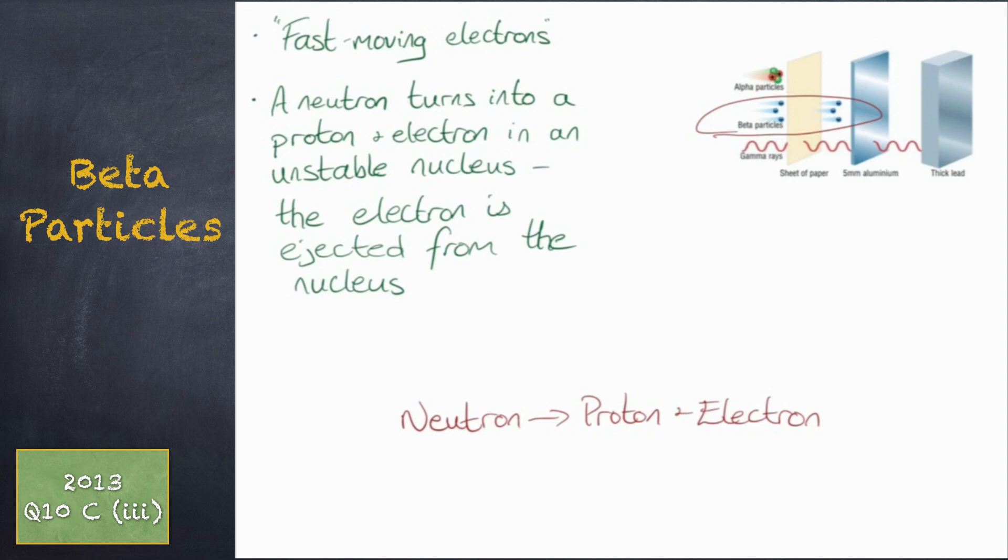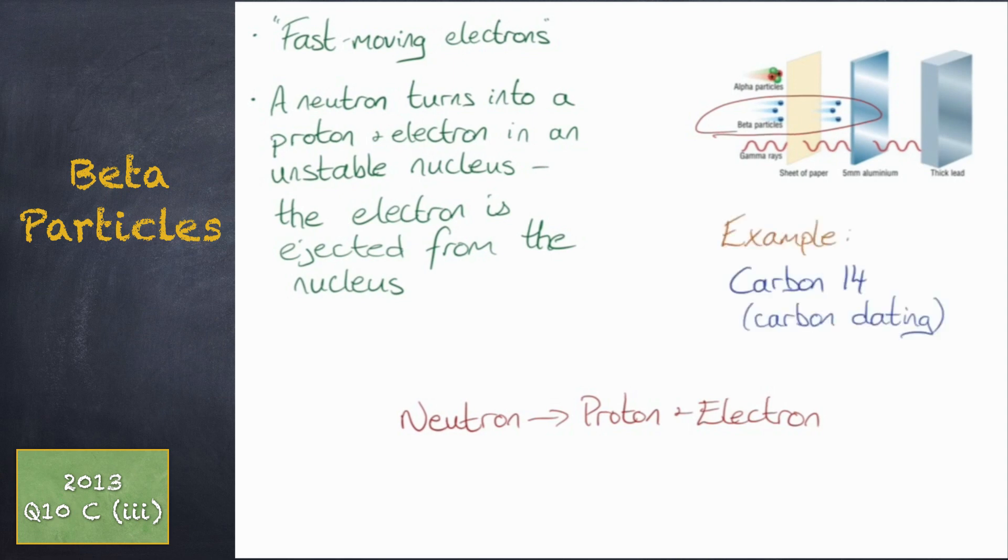Beta particles are lighter than alpha particles so can penetrate more. 5 mm of aluminum can stop beta particles. Carbon-14 is an example of a beta particle. It is used to find out how old ancient objects are.